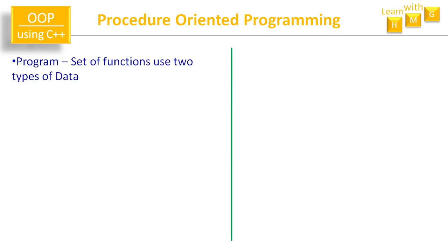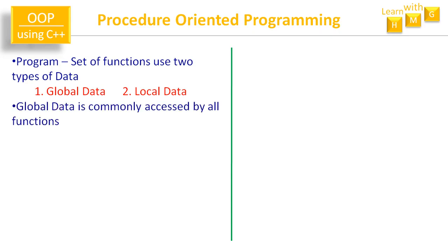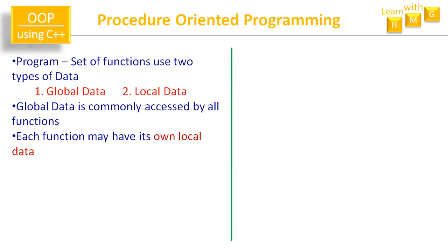These functions use two types of data: global data and local data. Global data is commonly accessed by all functions — it is declared in the program but outside the functions, and it is available to all functions within the program. Apart from that, each function may have its own local data, declared within the function as local variables.